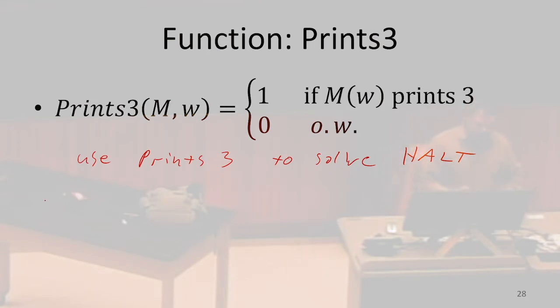And the way that I'm going to do this is I'm going to construct a Python function, M prime, such that M prime prints 3 if and only if M on W, which was given to Halt, halts.